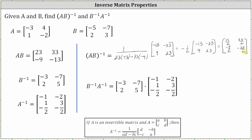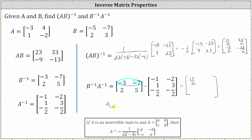Now we need to find B inverse times A inverse. To find the element in row one, column one, we multiply row one in the first matrix and column one in the second matrix. Negative three times negative one is positive three, plus negative seven times negative one half is positive seven halves, which is equal to six halves plus seven halves, or 13 halves. To find the element in row one, column two, we multiply row one in the first matrix and column two in the second matrix. We have negative three times negative two, which is positive six, plus negative seven times negative three halves, which is positive 21 halves. Six is equal to 12 halves, and 12 halves plus 21 halves is 33 halves.